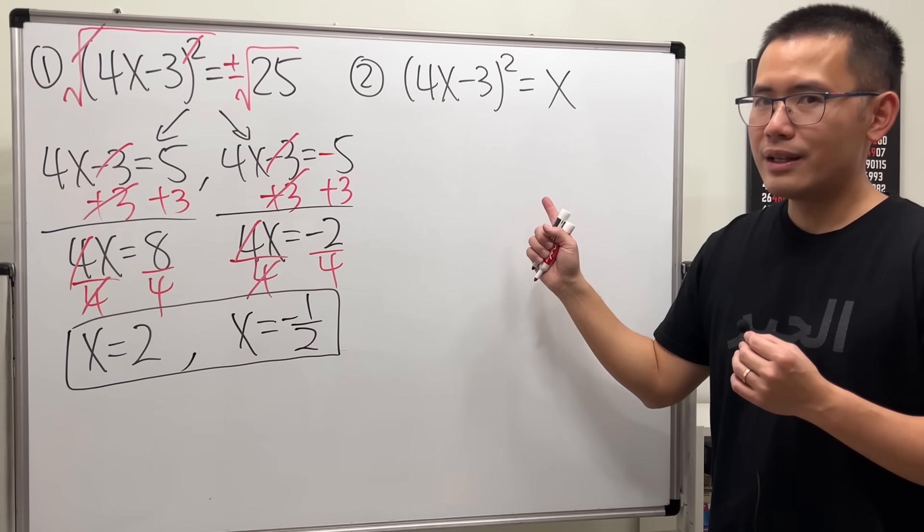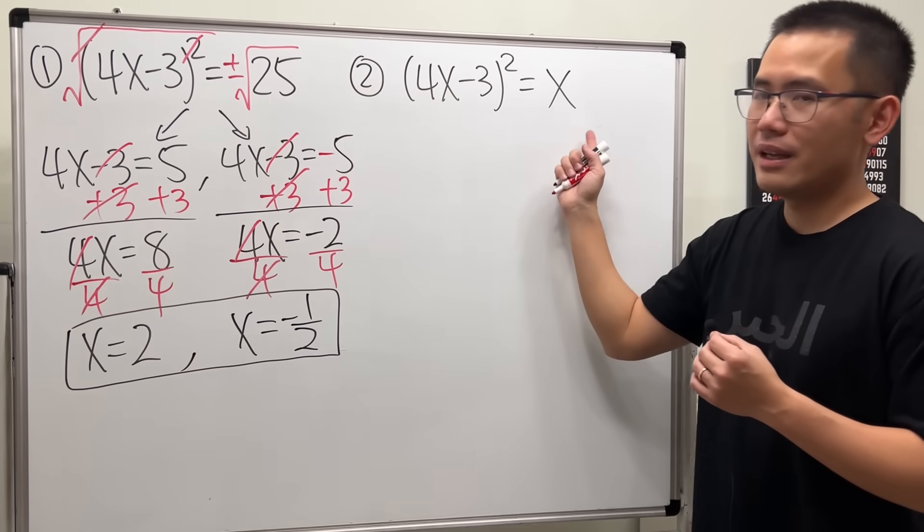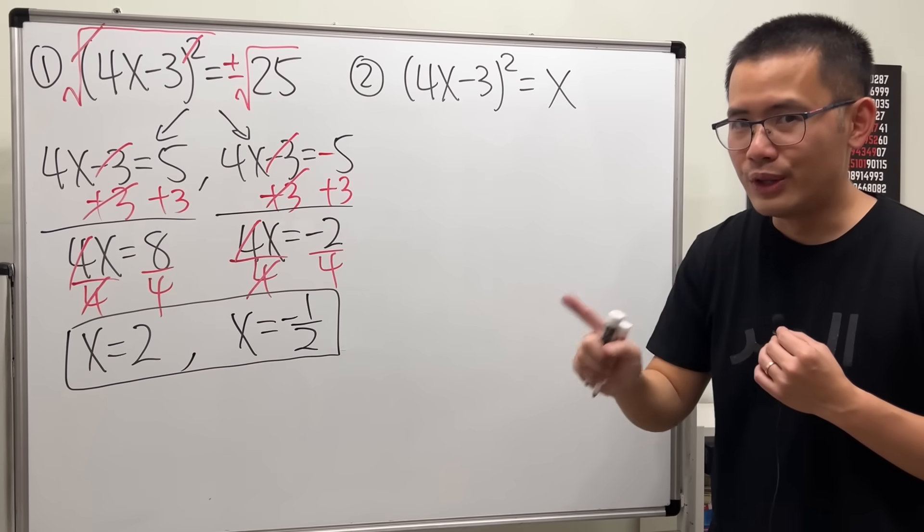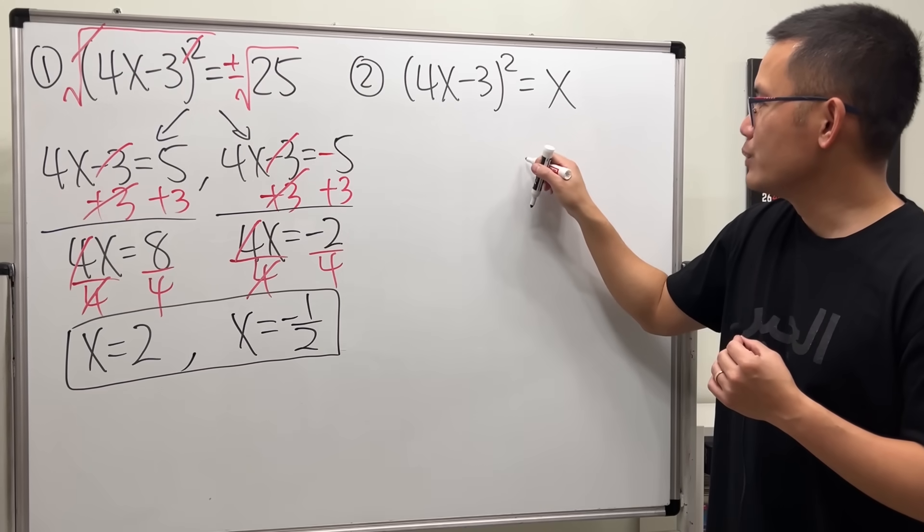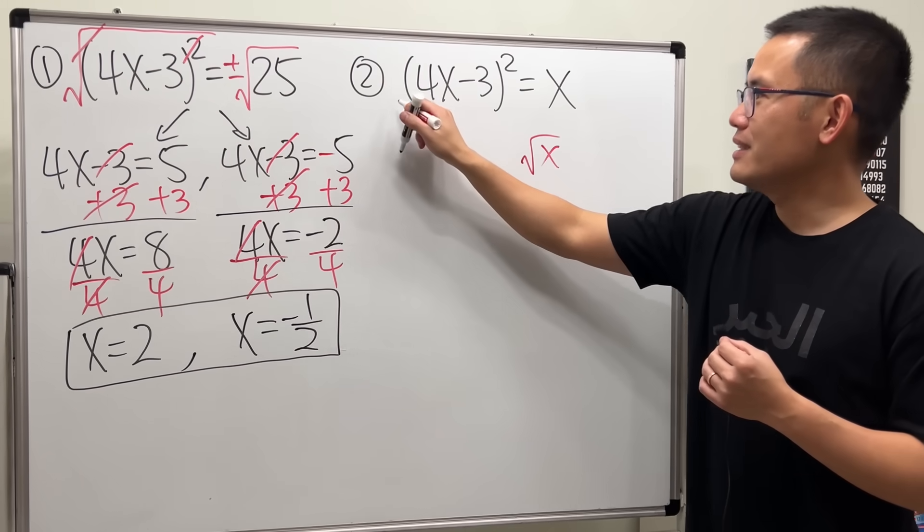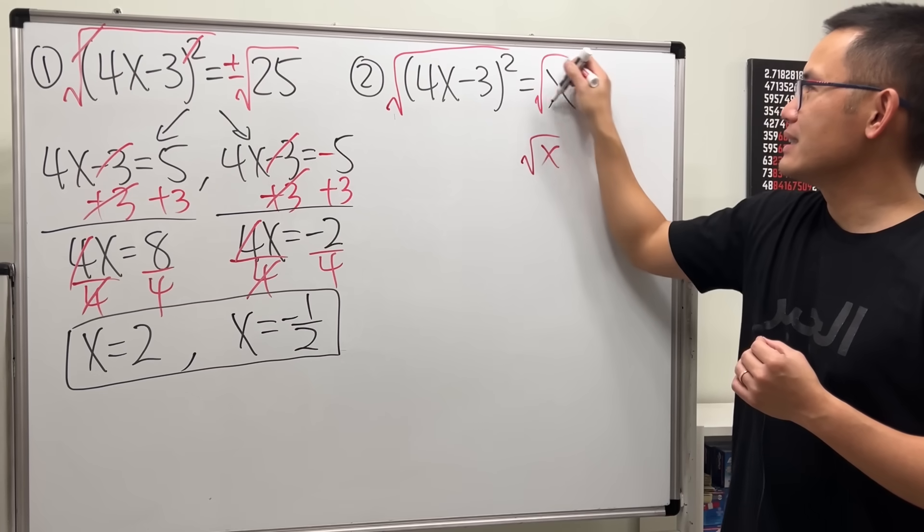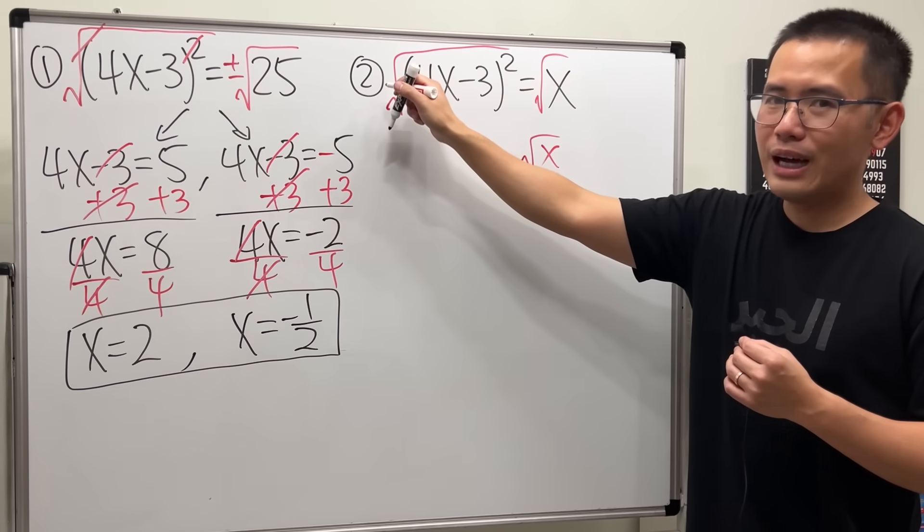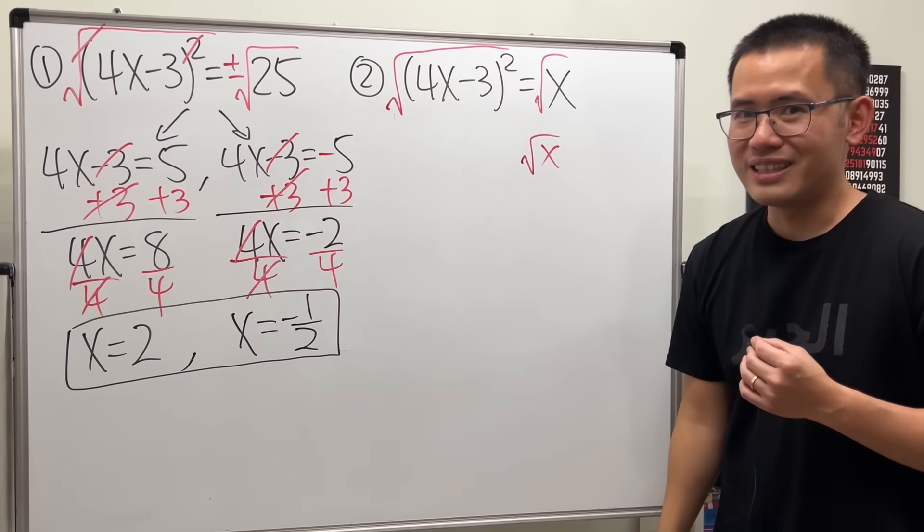Now, for the second one, can I do the same thing as the first one? No. If you take the square root, you end up with square root of x. If you take the square root like this and like that, you cancel this out, but you will still have x on both sides.